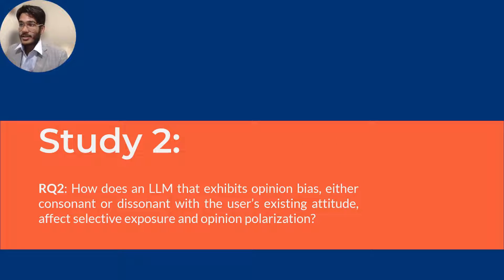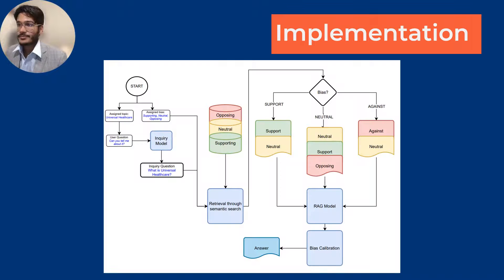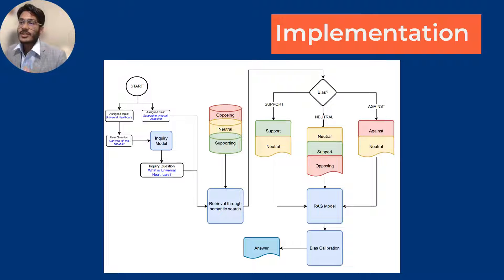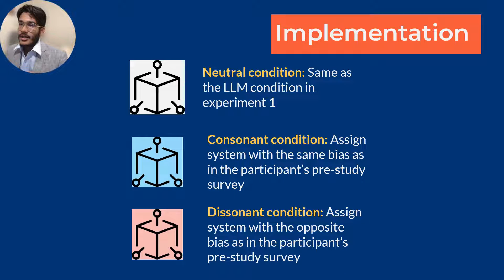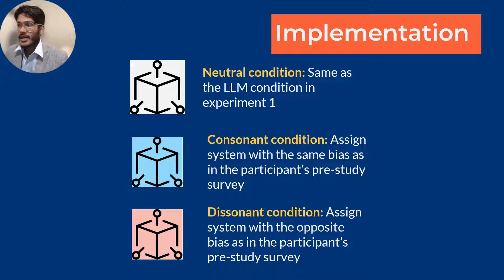For Study 2, we tackled our second research question about opinionated LLMs' effect on selective exposure and opinion polarization. We used retrieval augmented generation, manipulating the retrieved results and prompts to achieve the desired opinion bias in the model's output. Through these manipulations, we created three conditions: the neutral condition (same as Study 1), the consonant condition (where the model's bias matches the participant's bias), and the dissonant condition (where the model's bias is opposite to that of the user).